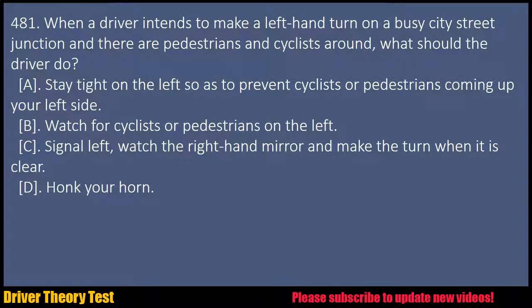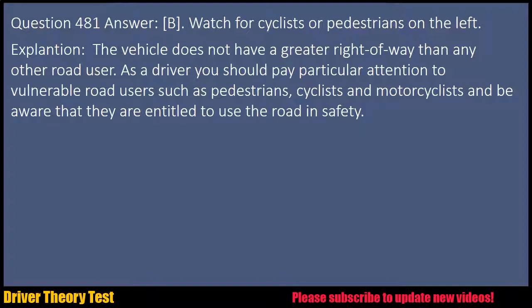Question 481: When a driver intends to make a left-hand turn on a busy city street junction and there are pedestrians and cyclists around, what should the driver do? A. Stay tight on the left so as to prevent cyclists or pedestrians coming up your left side. B. Watch for cyclists or pedestrians on the left. C. Signal left, watch the right-hand mirror and make the turn when it is clear. D. Honk your horn. Answer: B. Watch for cyclists or pedestrians on the left. Explanation: The vehicle does not have a greater right-of-way than any other road user. As a driver you should pay particular attention to vulnerable road users such as pedestrians, cyclists and motorcyclists, and be aware that they are entitled to use the road in safety.